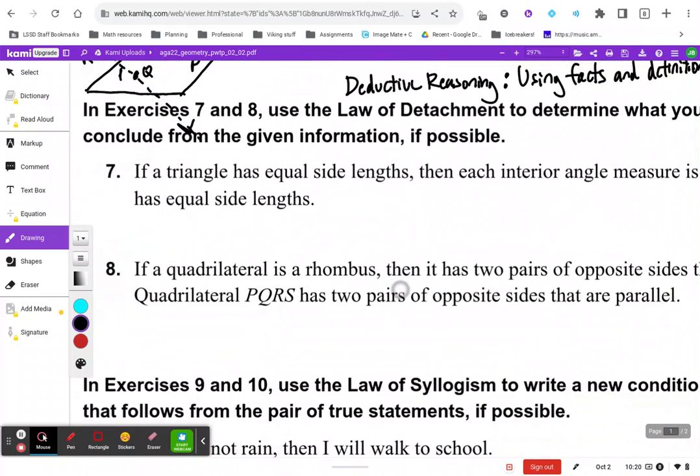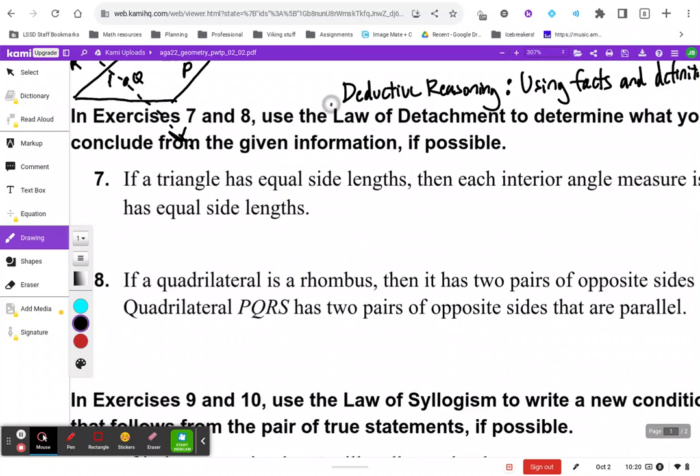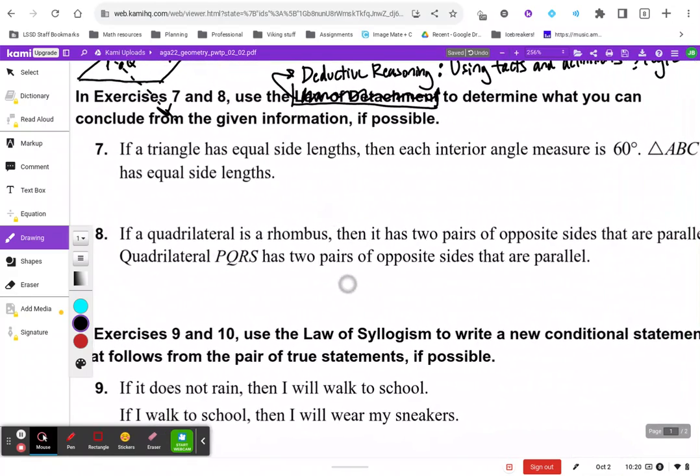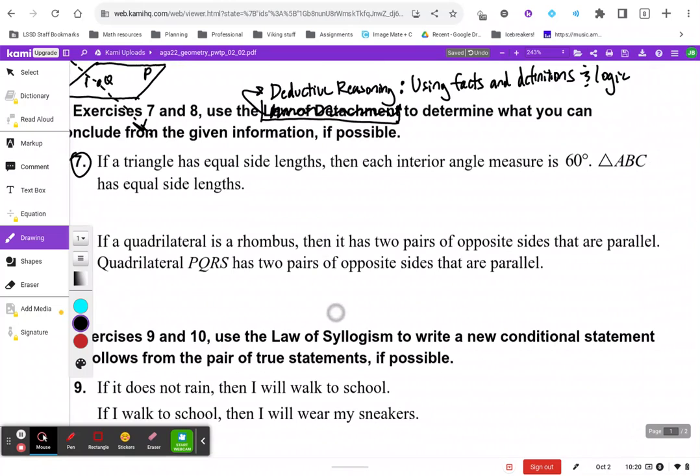So that is what we're doing. By the way, this law of detachment language, really all we're saying here is don't even worry about that. We just used deductive reasoning is the only word we actually care about. Pause the video if you need a second to think about number 7 and try it on your own. I'm going to just go ahead and move forward here and show you what the answer should be.